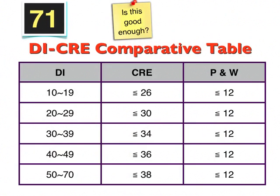What I mean is, if you have a DI from 10 to 90, which is considered normal and not too difficult, your CIE is supposed to be under 26.